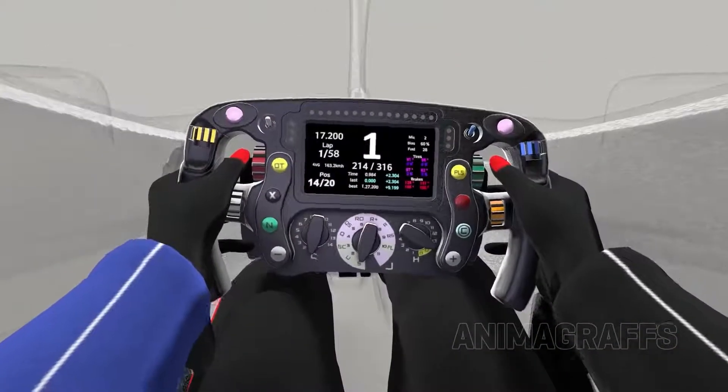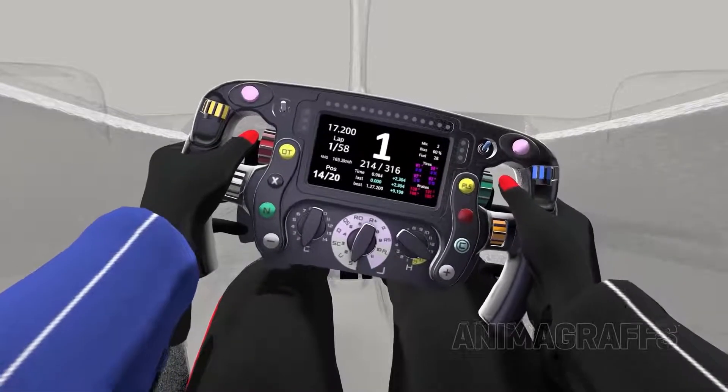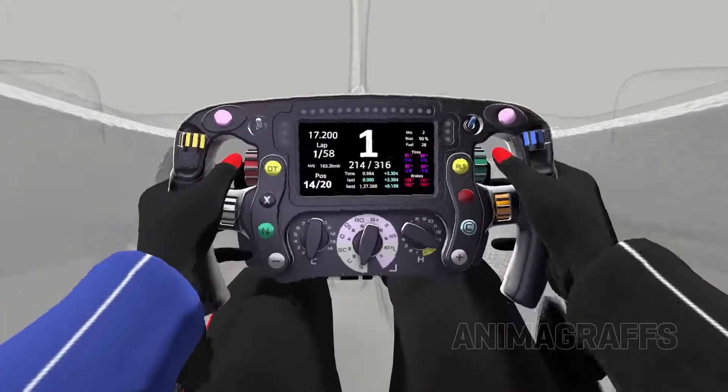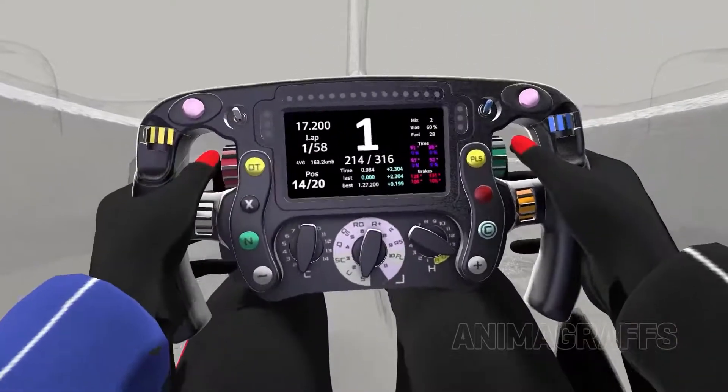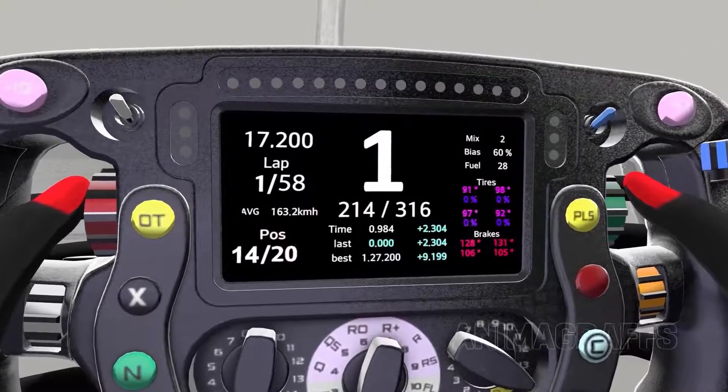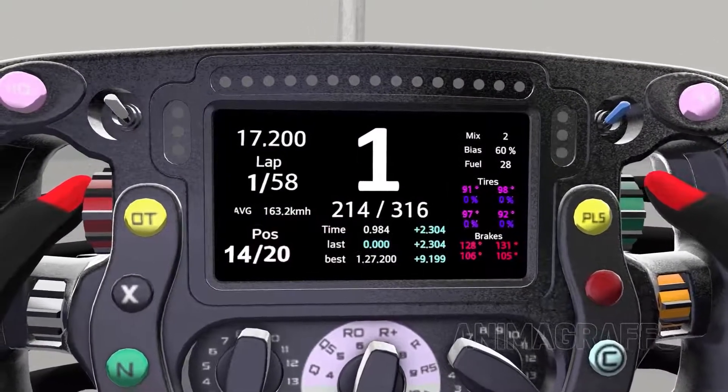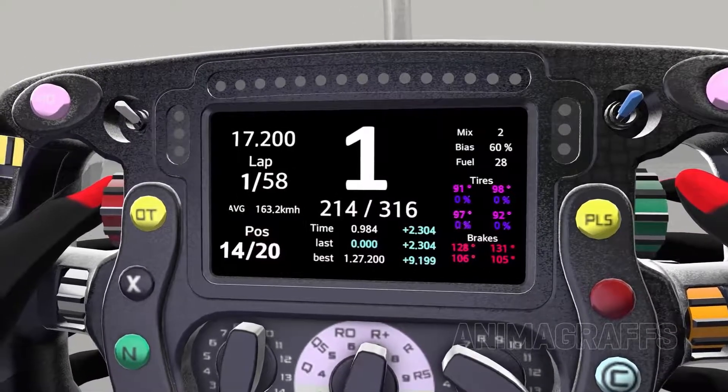This is the famed Formula 1 steering wheel. Drivers mostly don't need to remove their hands from the wheel for steering, so the wheel doesn't need to be round. A customizable display at the center shows the current gear as the largest item, along with things like lap times, tire and brake temperatures, average speed, and so on.